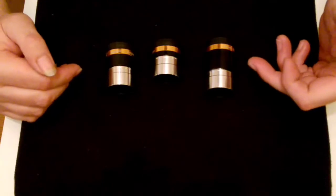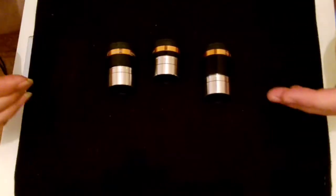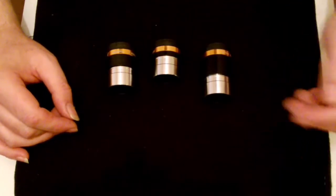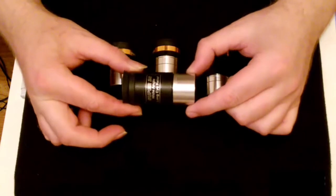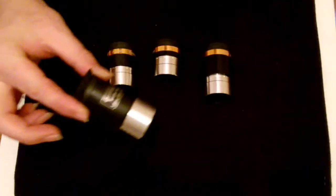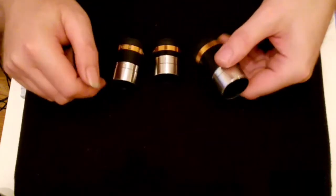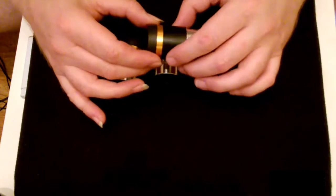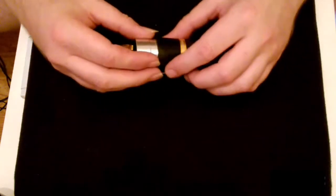These are a cheap alternative to your standard achromatic doublet eyepiece that you usually get with normal telescopes these days. Now the quality of these, some people are saying they're made of plastic, other people are saying they're glass. Well let's just start, there's a simple answer to that.